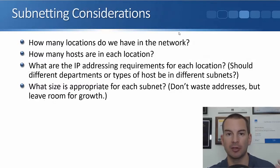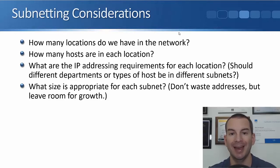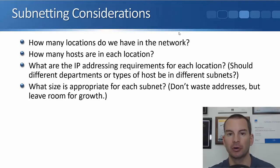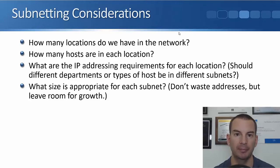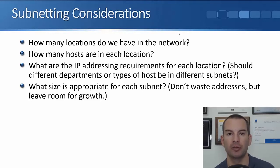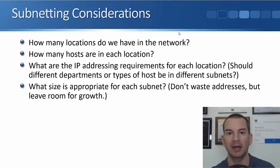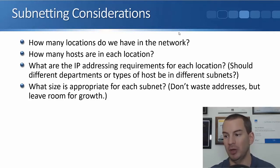The things we need to consider when doing the design are: how many different locations do we have in the network that are going to need subnets, and how many hosts are going to be in each of those subnets. What are the IP addressing requirements for each location? Should different departments or types of hosts be in different subnets? For example, you might have one office with a sales department, an R&D department, and an accounting department, and you want accounting secured from other departments. In that case you would put it in its own separate subnet, because different subnets must route between them at a router and are easy to secure at layer three based on IP address.